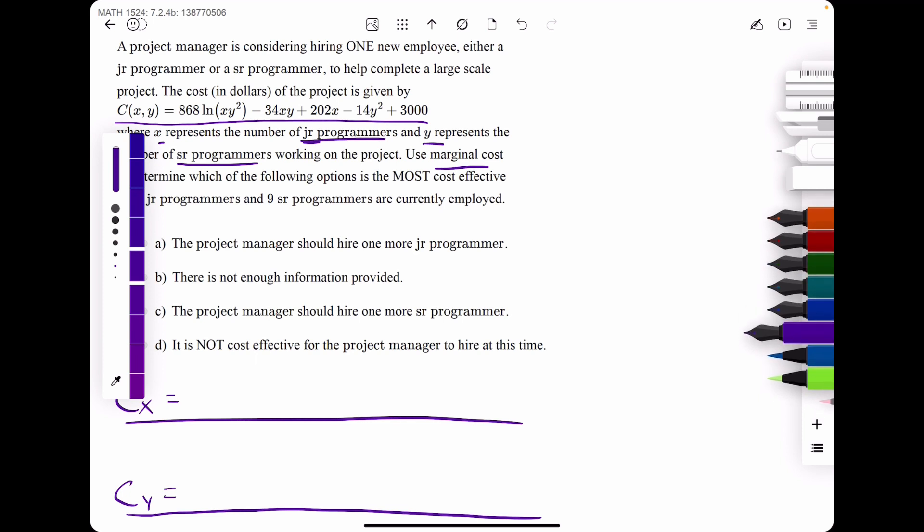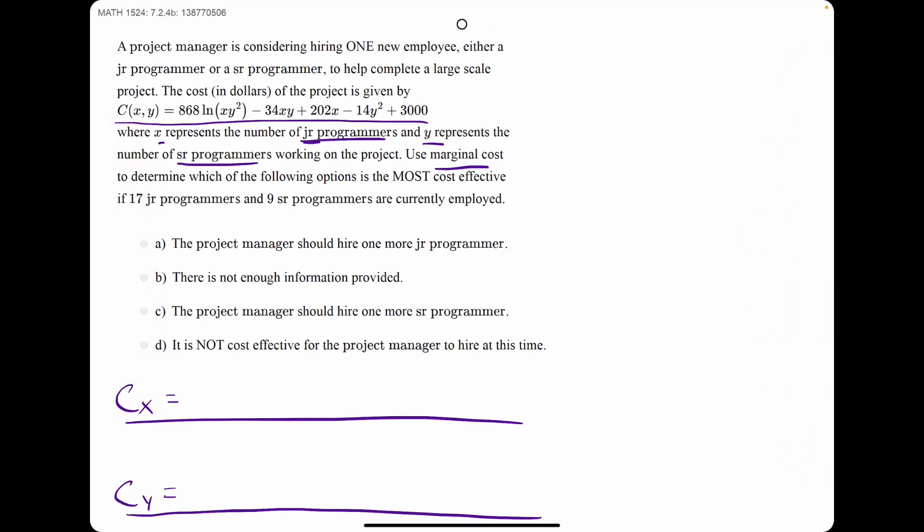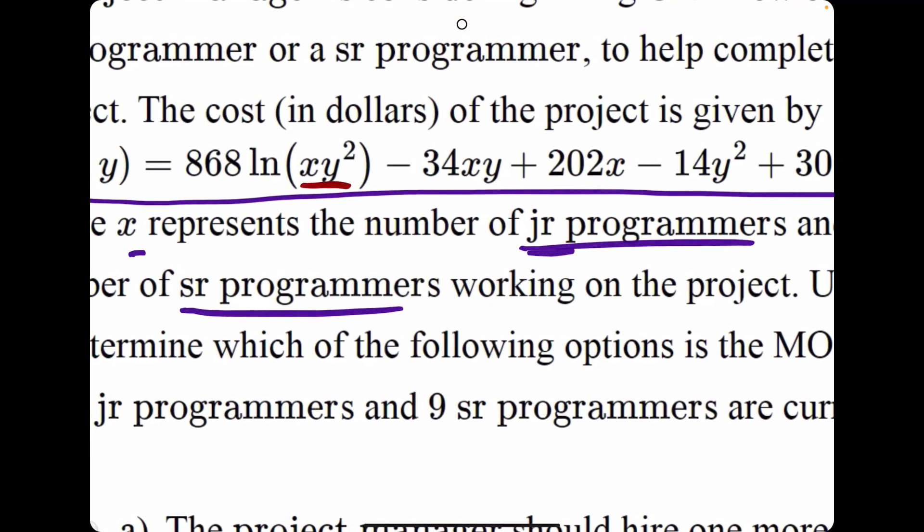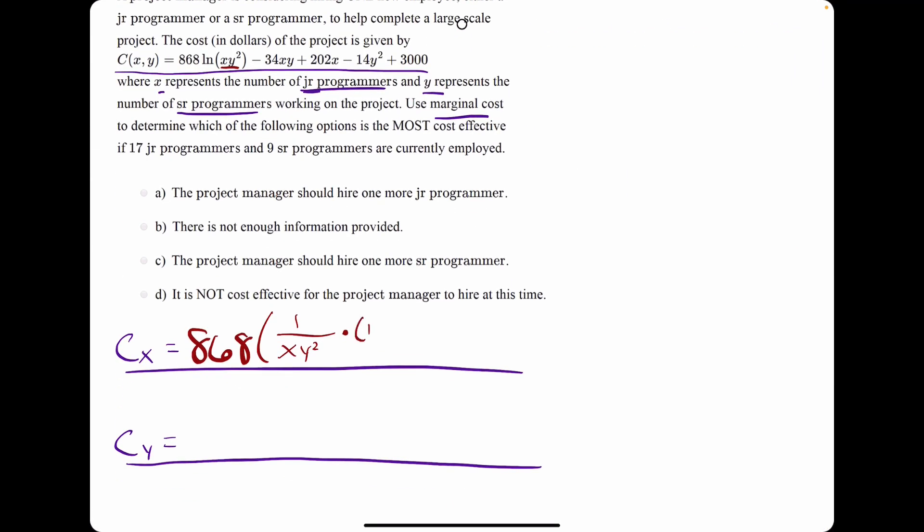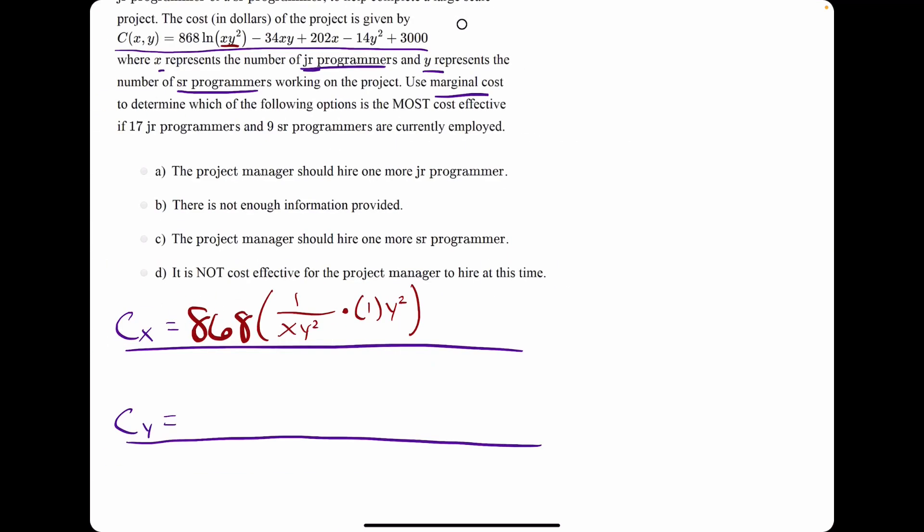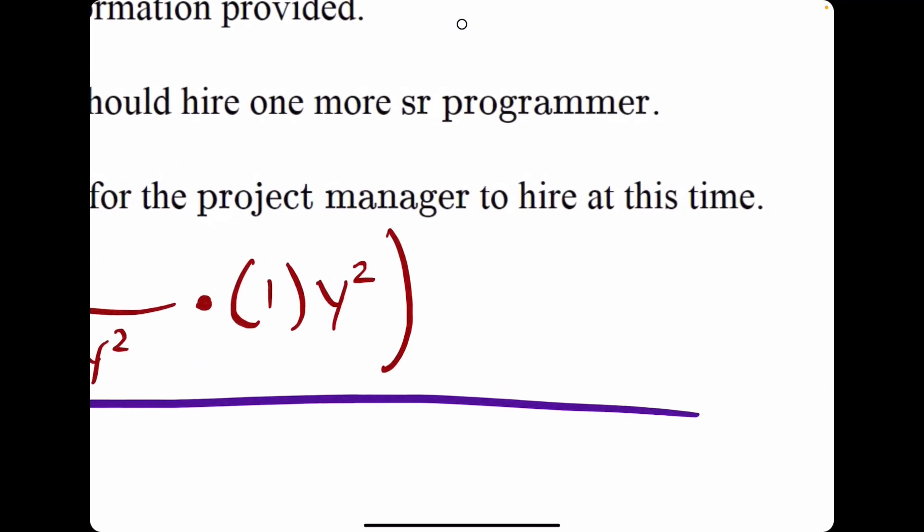I'm not going to waste any more time. We're going to find the partial derivative first with respect to x, which is 868. It'll stay right where it is. Ln of anything goes to 1 over that anything for its derivative. And then we want to multiply this by the derivative of the inside with respect to x. The x term goes to 1 when we find its derivative, and then y squared is attached to it, so it'll come along for the ride. That's why the derivative of the inside is 1y squared.